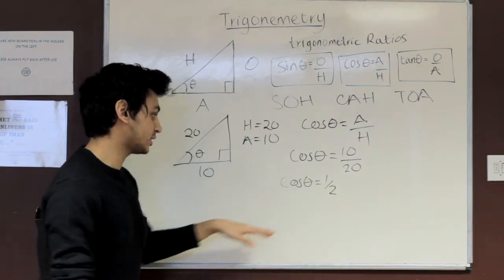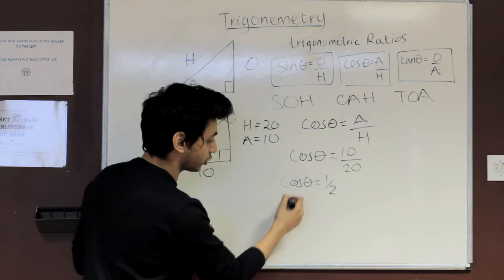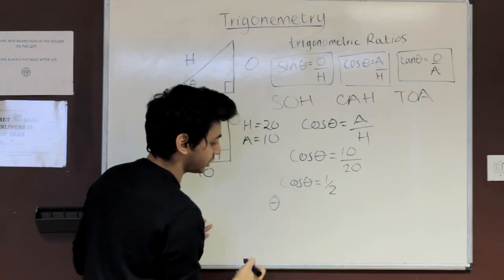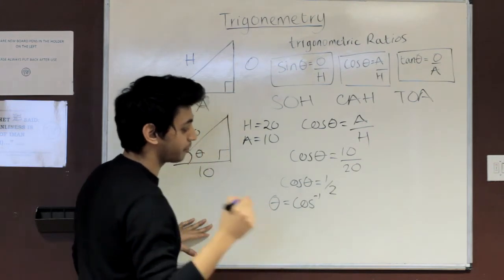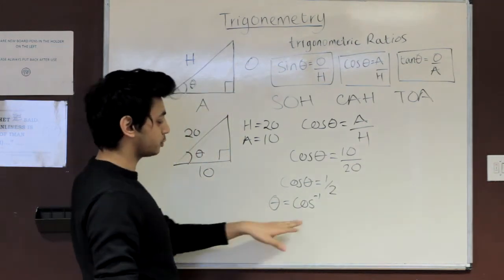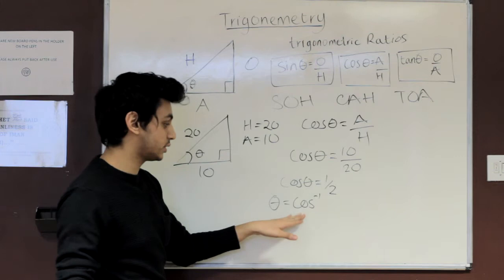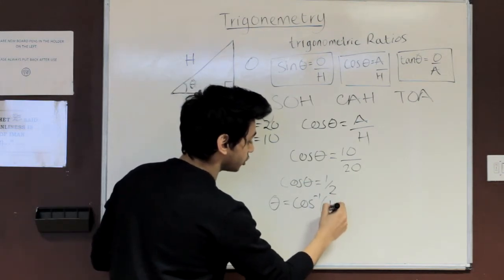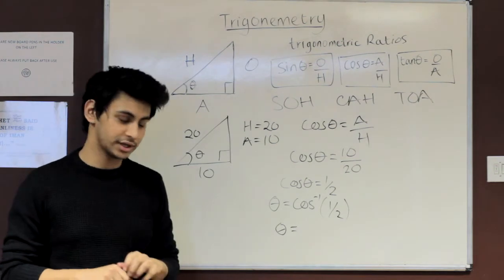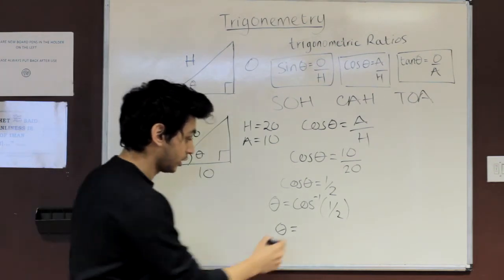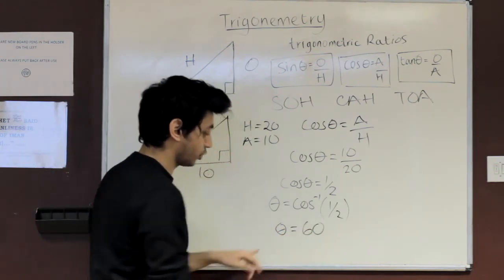We need to do one final operation to this and that is the inverse of cos. So we're going to get theta equals the inverse of cos, which is a function in your calculator. You should be familiar with this and you should be able to know how to use this, and you're just going to put your half in there. So once you plug this into your calculator, you should get a value of 60 as your theta.